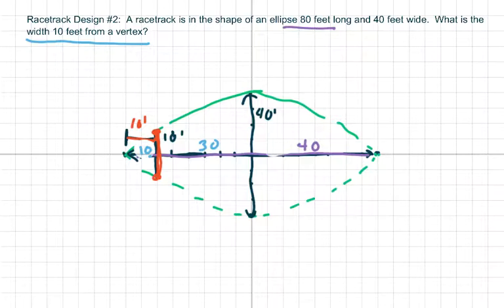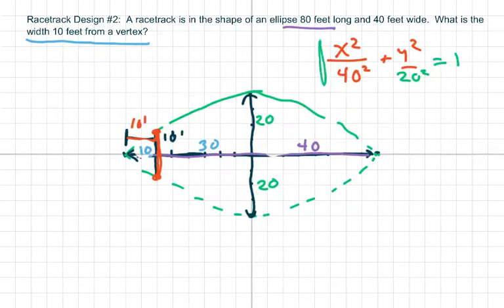So basically what you're going to do is find the equation and it's just going to be x squared over 40 squared. And remember, y squared - this is half of 40, which is 20. So this is 20, this is 20. So that's going to be 20 squared equals 1. So there's your equation.